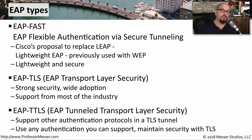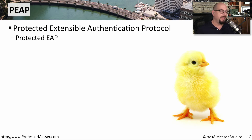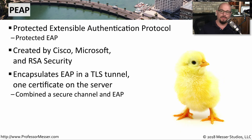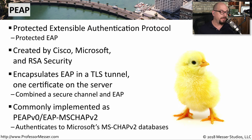Some organizations needed additional options for authentication, so we created EAP-TTLS, which is EAP Tunneled Transport Layer Security. This allowed tunneling of other types of authentication methods through the existing encrypted EAP communication. Another popular EAP type is PEAP, the Protected Extensible Authentication Protocol, or Protected EAP. This was created by Cisco, Microsoft, and RSA Security to provide EAP within a TLS tunnel. It was commonly implemented on Microsoft devices as PEAP v0, also referred to as EAP-MSCHAPv2, because it authenticated against the Microsoft CHAP v2 databases.